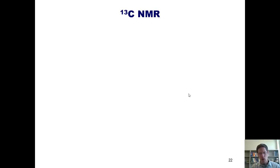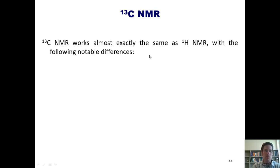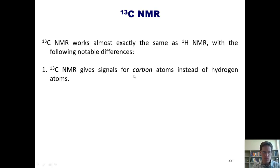We now arrive at carbon NMR, which is frequently called C13 NMR. C13 NMR works almost exactly the same as hydrogen NMR with the following notable differences. First, C13 NMR gives signals for carbon atoms instead of hydrogen atoms.